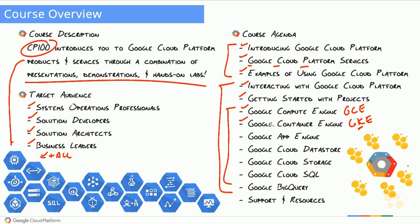We'll also look at Google App Engine, otherwise known as GAE — their Platform as a Service offering that allows us to simply focus on building applications. We don't have to worry about the underlying infrastructure; it's fully managed. We code, we deploy, and we're back to coding again, so we can focus on features and our application rather than the environments they run on.